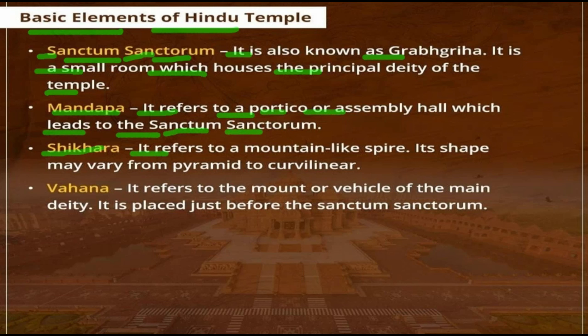The Shikhara refers to the mountain-like spire of the temple. Its shape may vary, ranging from a pyramid form upward. The Antarala refers to the vestibule or mouth of the passage, which is placed just before the sanctum.